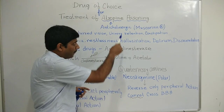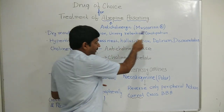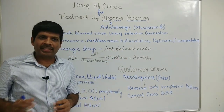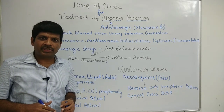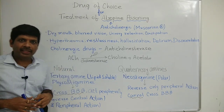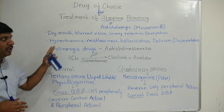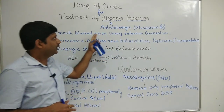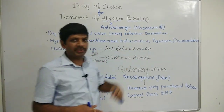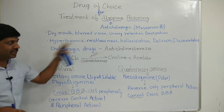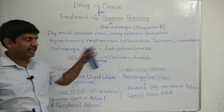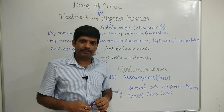Blocking the muscarinic receptor, both at central and peripheral locations, will produce symptoms such as dry mouth, urinary retention, blurred vision, constipation, restlessness, hallucination, delirium, and disorientation.